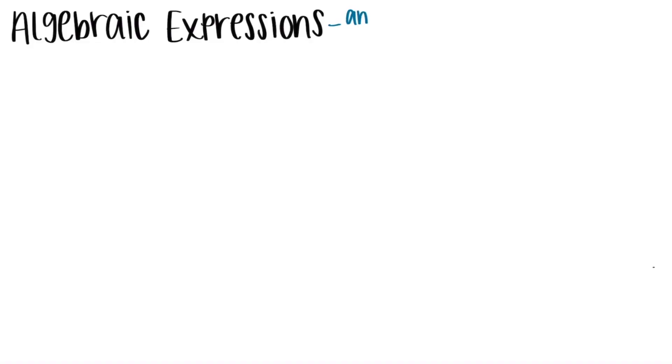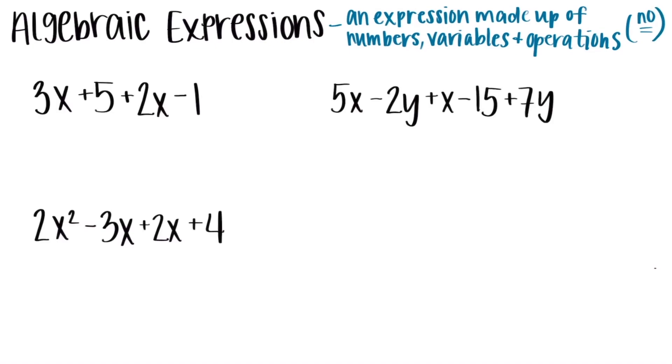To start off our algebra series, we're going to start by talking about algebraic expressions. So we're going to go over what they are, how to simplify them, and then end with how to add and subtract them. So an algebraic expression is an expression made up of numbers, variables, and operations. This does not have an equal sign. That is an equation, which we will get to in the future. But today we're just talking about expressions, so no equal signs.